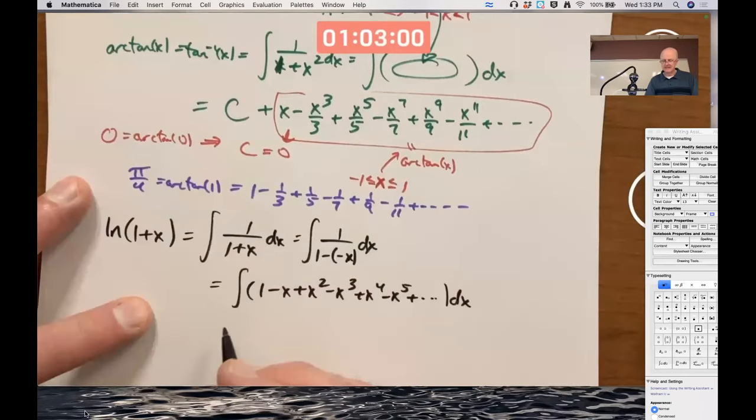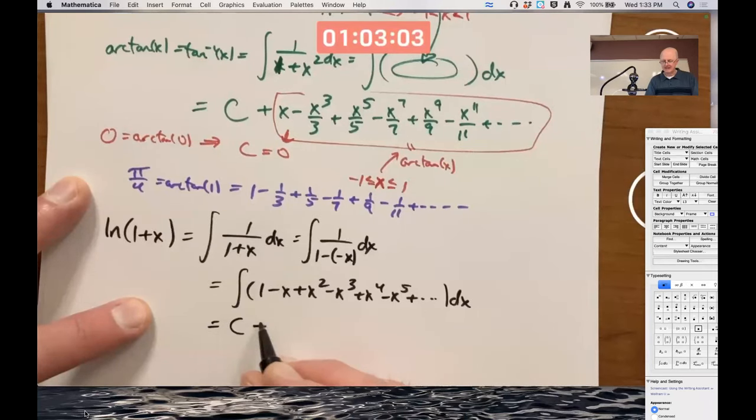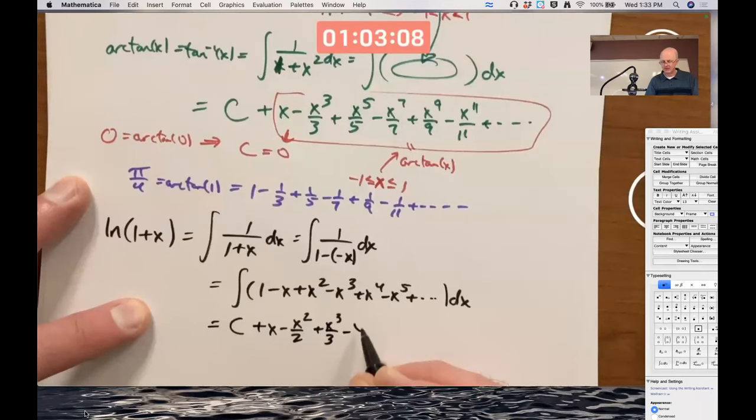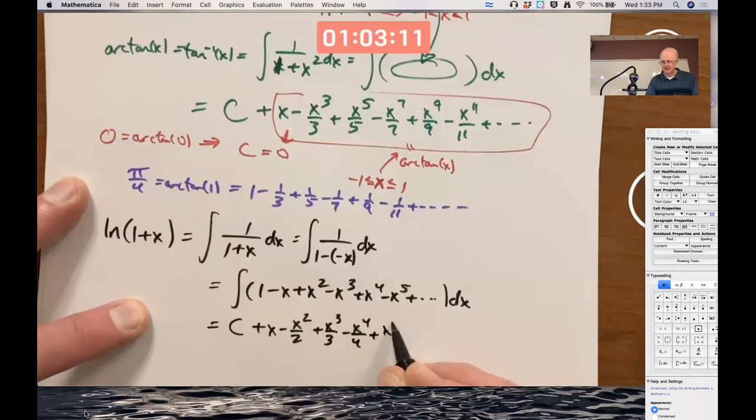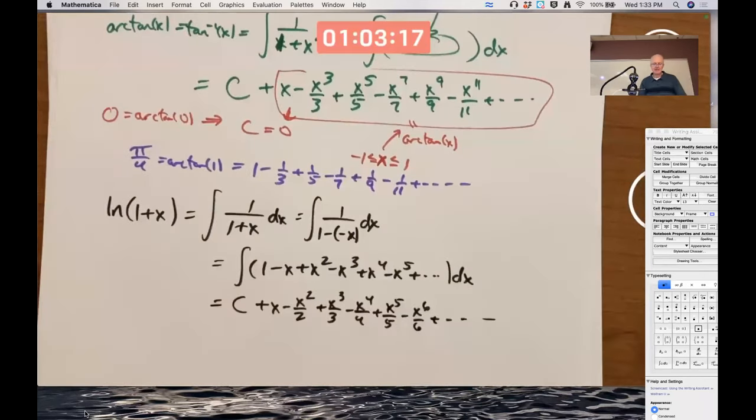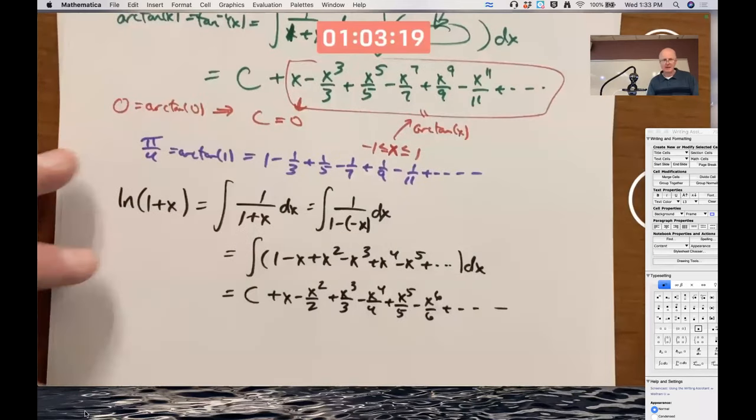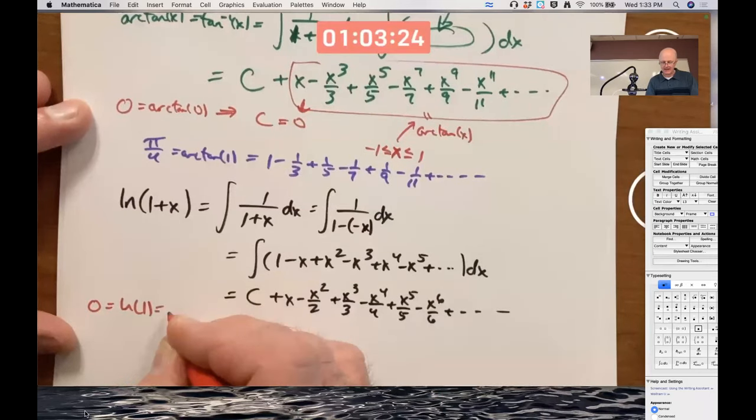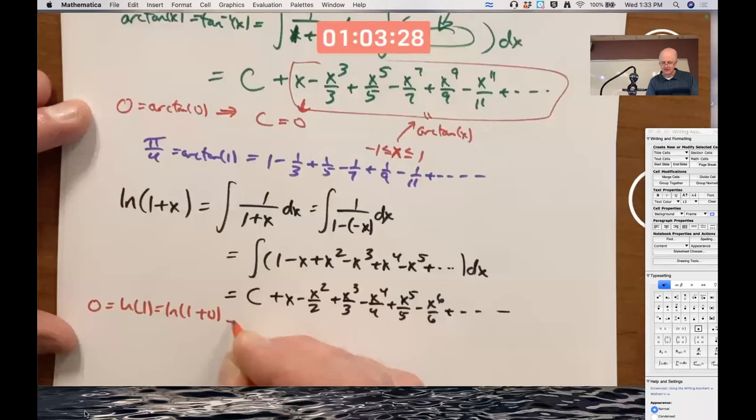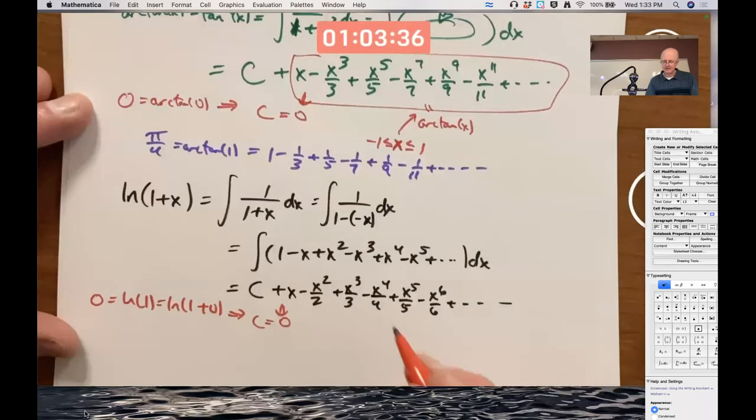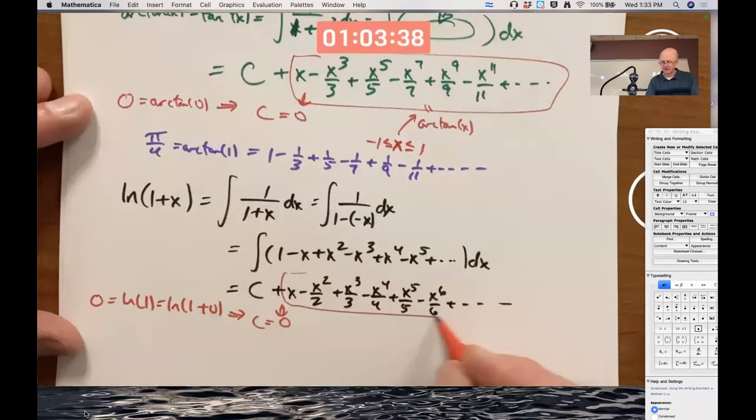So this becomes c plus x minus x squared over 2 plus x cubed over 3 minus x to the 4th over 4 plus x to the 5th over 5 minus x to the 6th over 6 plus dot dot dot. The c once again ends up being 0 because natural log of 1 is 0 and 1 is 1 plus 0. So if you replace x with 0 in the series, it implies c is 0. So just this part equals the natural log of 1 plus x.